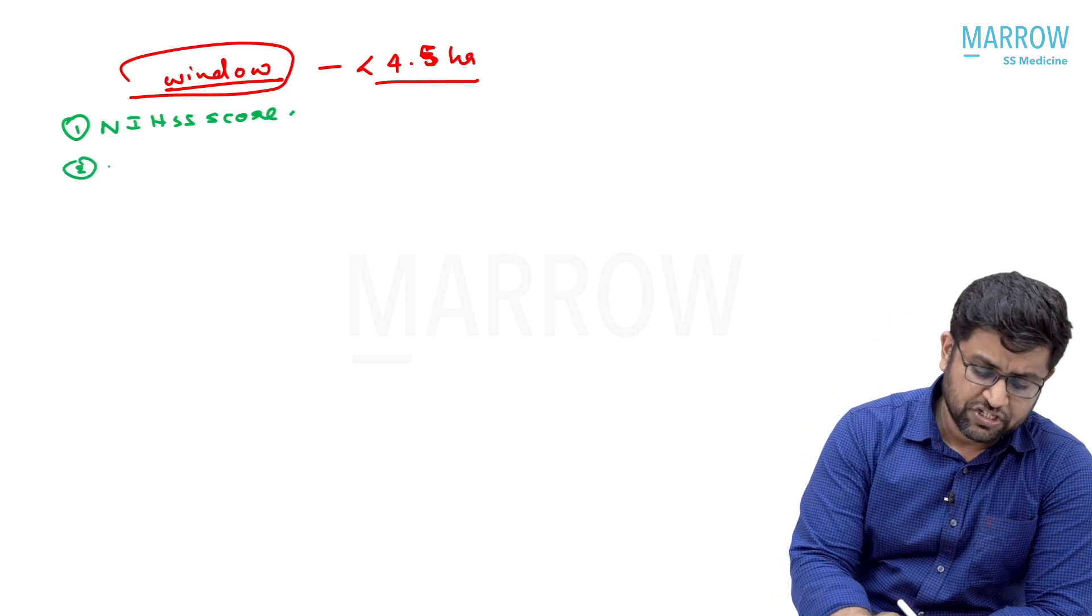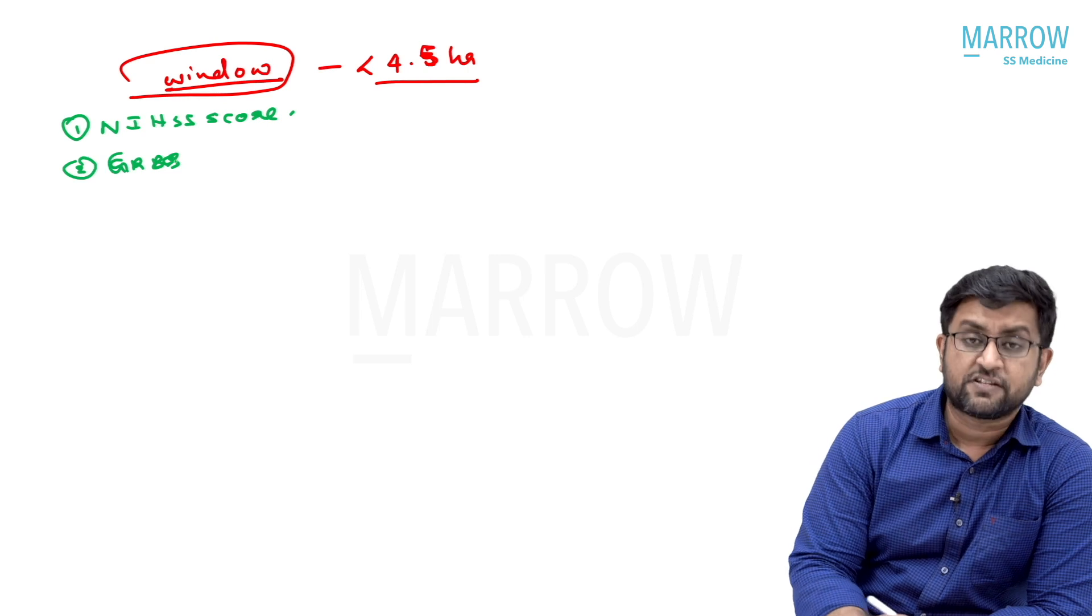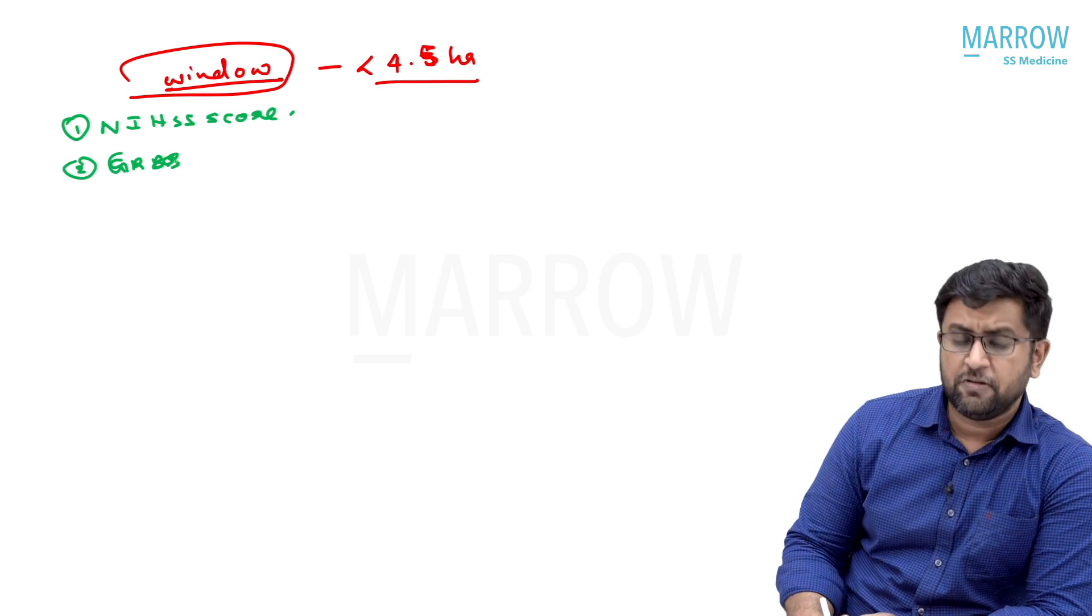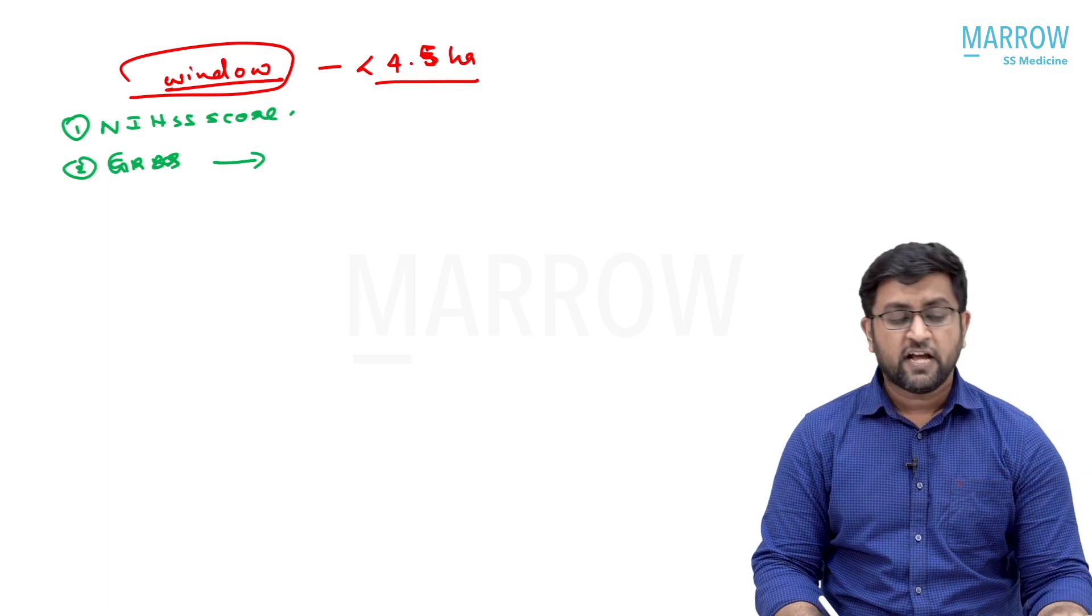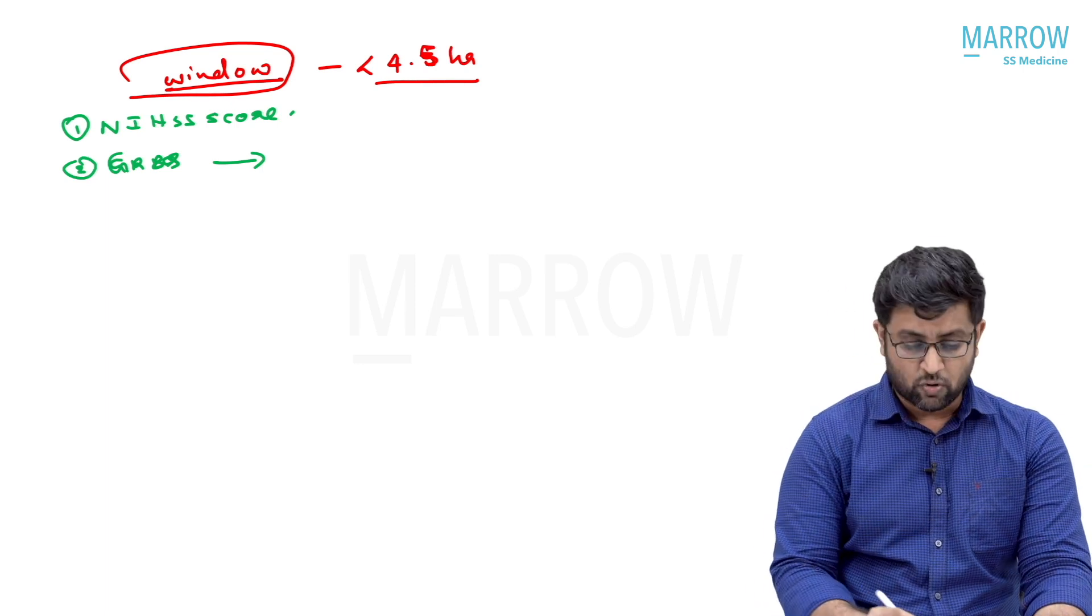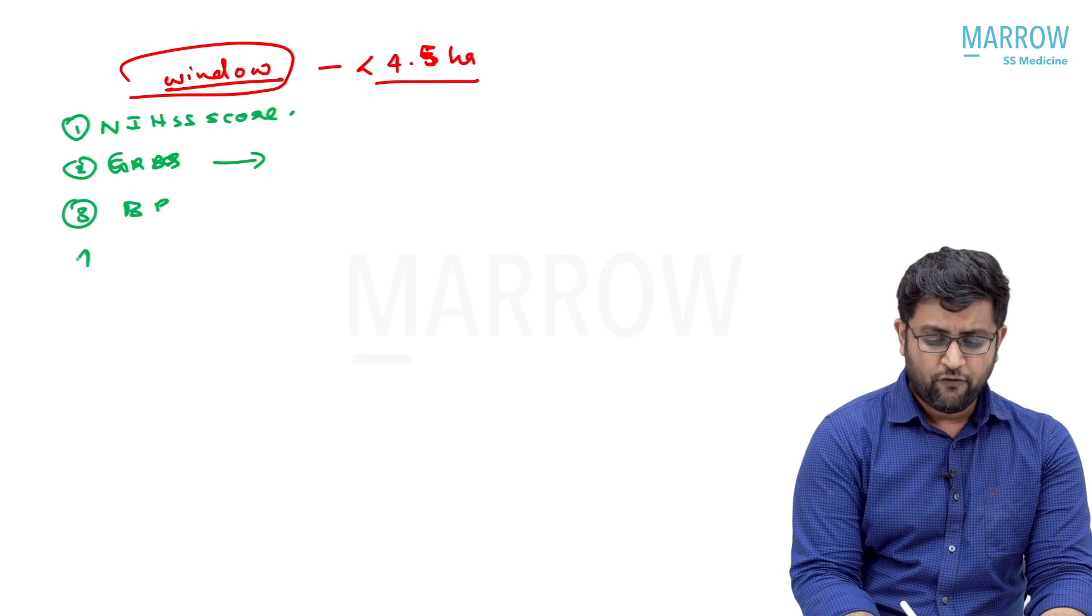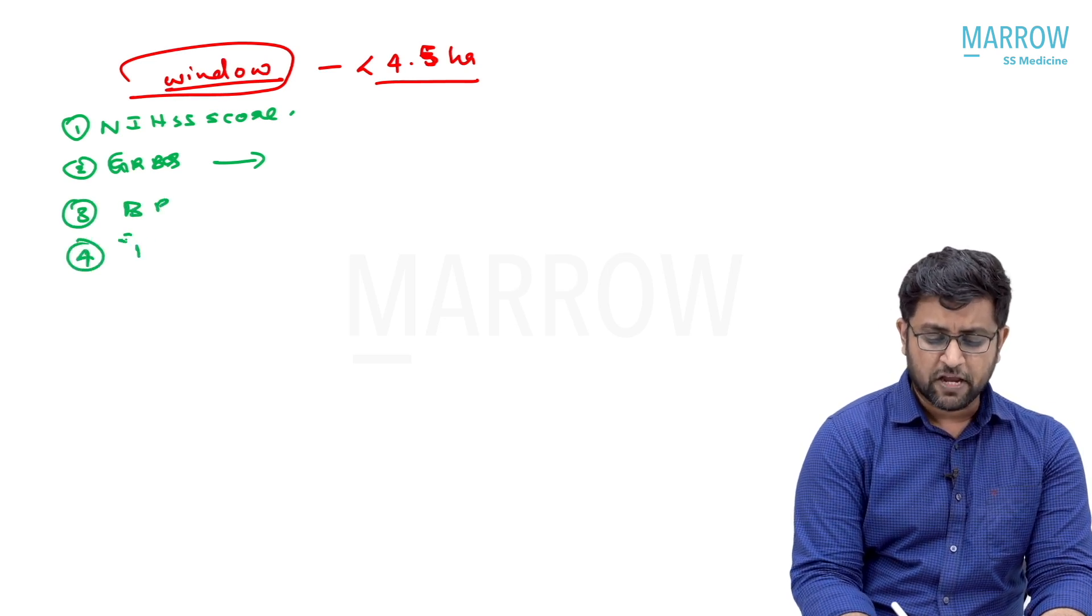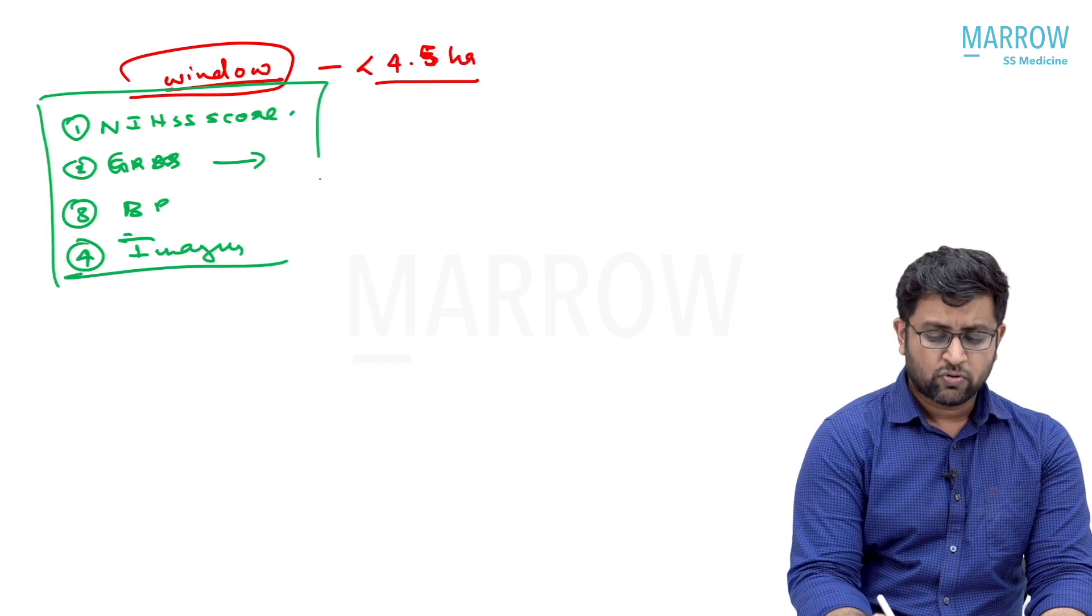The second thing you should do is GRBS or glucometer-based RBS. Rapid RBS testing should be done because hypoglycemia and hyperglycemia should be corrected before lysis. Especially, hypoglycemia can mimic a stroke. Then third, blood pressure. And fourth, imaging. These are the only things required prior to thrombolysis.